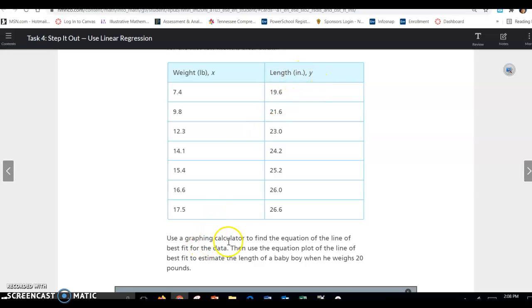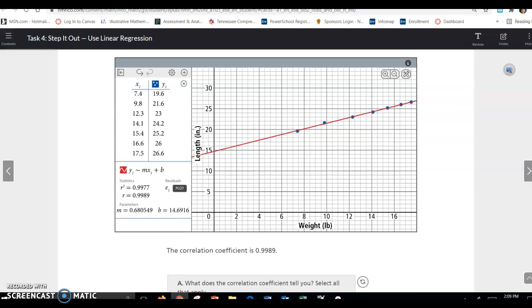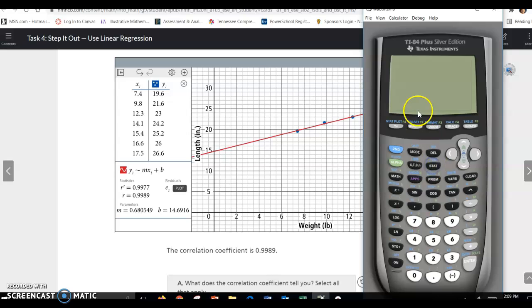So use a graphing calculator to find the equation of the line of best fit for the data, then use the equation plot of the line of best fit to estimate the length of a baby boy when he weighs 20 pounds. So they went ahead and graphed this. If you want to graph this yourself, all you have to do is go to stat, click on stat and hit one for edit, and then enter your points here.